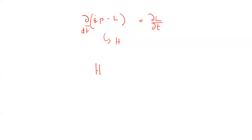We have the Hamiltonian, which will be a function of Q's, P's, and T's — and T's is nothing but Q-dot times P minus the Lagrangian L. This is straight from the previous equation, as we had said in the previous lecture. Now, from this, we can derive an equation of motion based on the Hamiltonian.